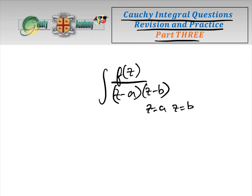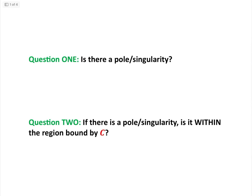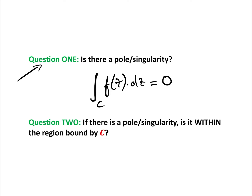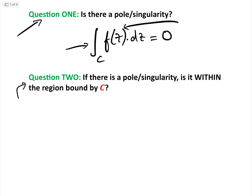We are going to ask ourselves the same questions as in the first two videos, because sometimes these things can be very easy. The first question we always ask when we see any of these Cauchy integrals is: is there even a pole or singularity? If f(z) is analytic over the region and there is no pole or singularity, then the integral equals zero by Cauchy's Integral Theorem. Question two: if there is a pole or singularity, is it within the region bounded by C?